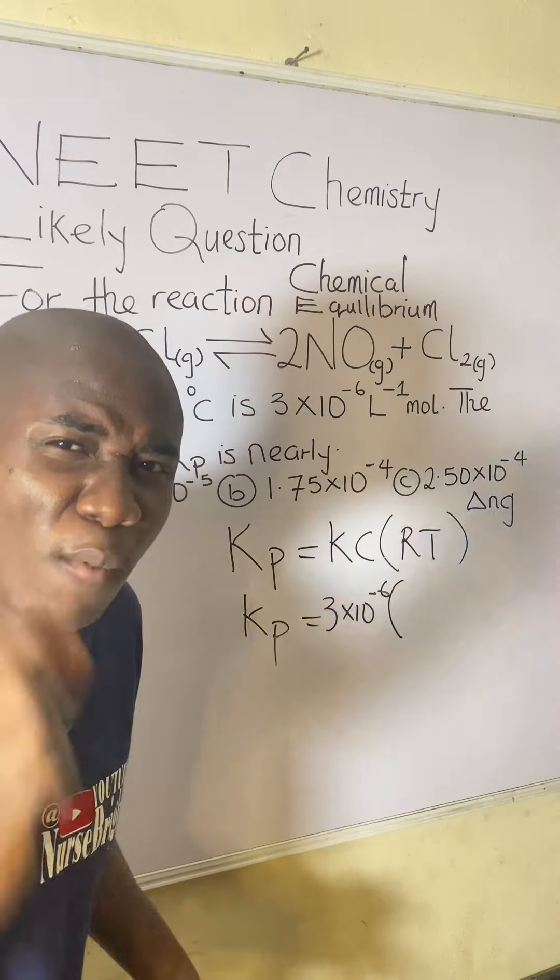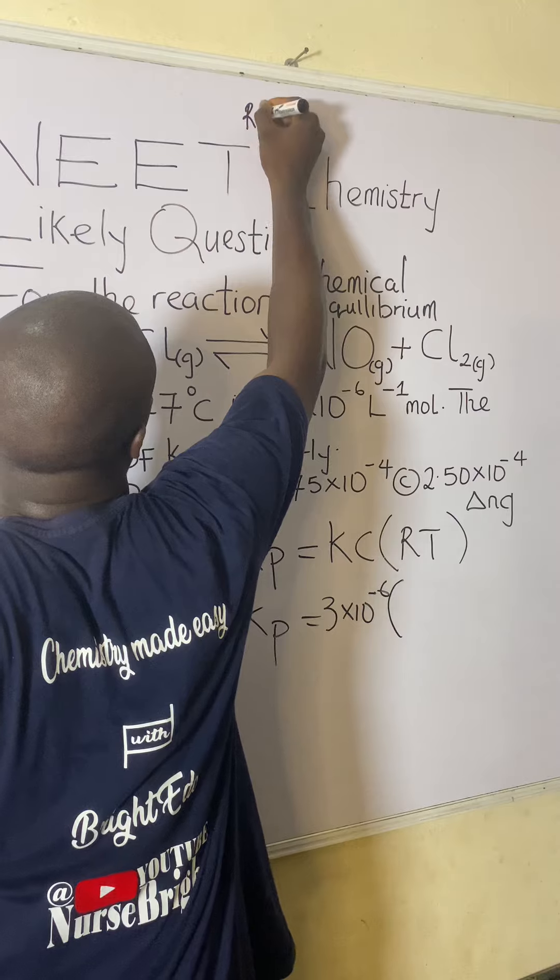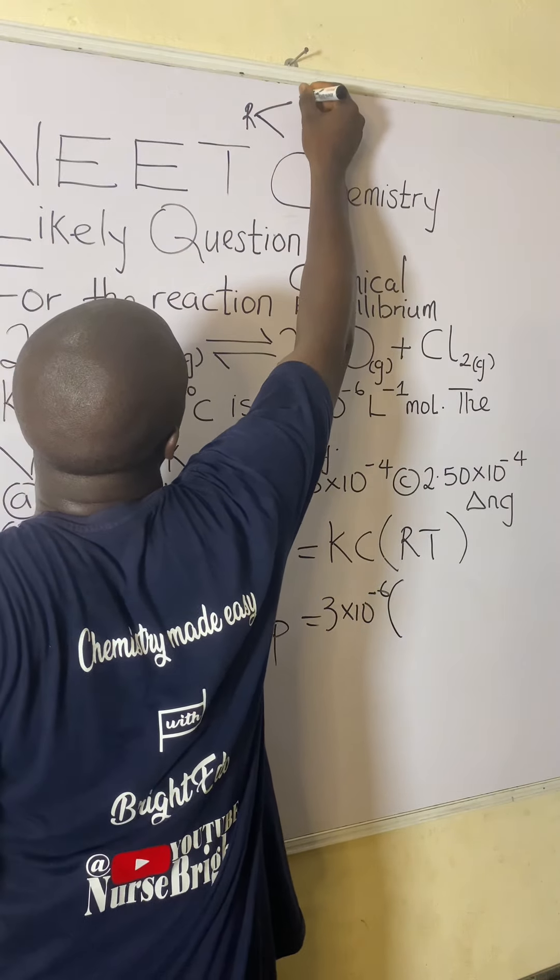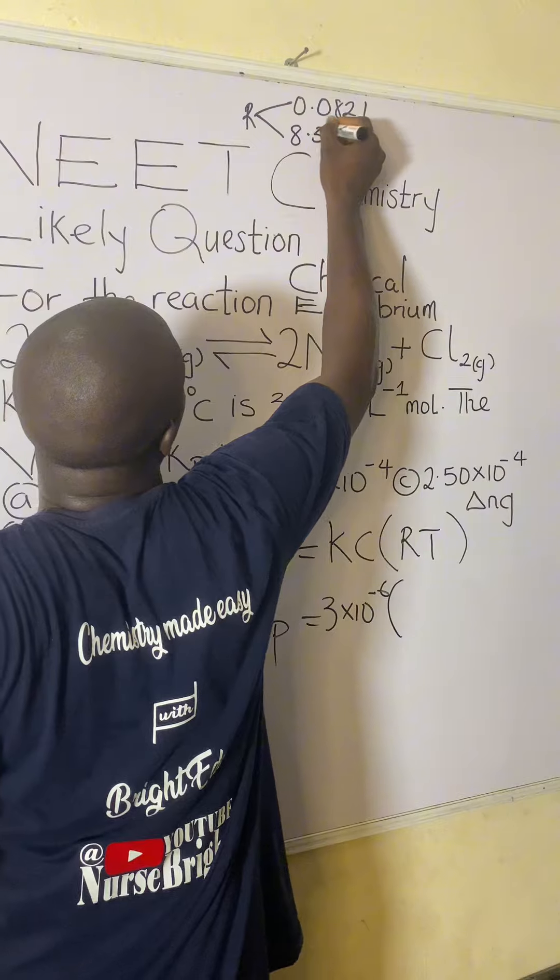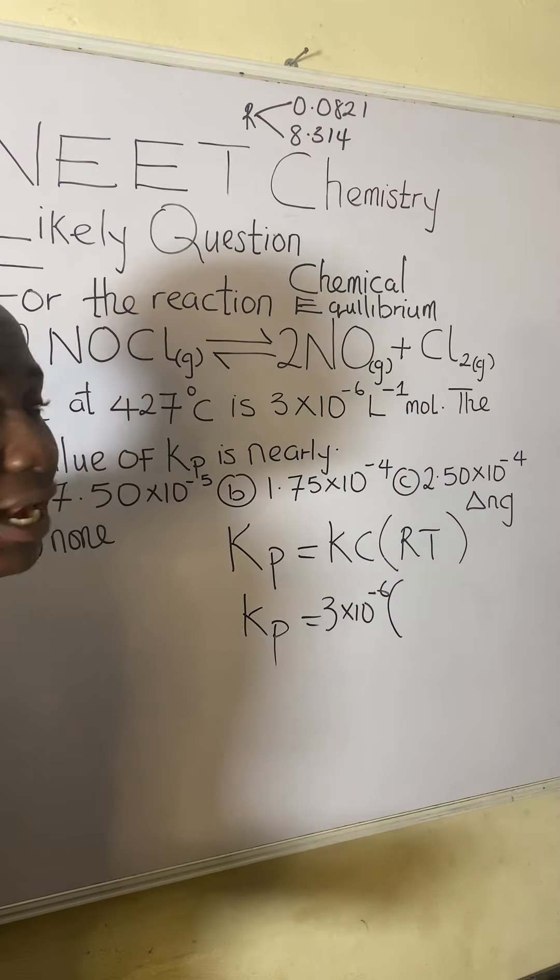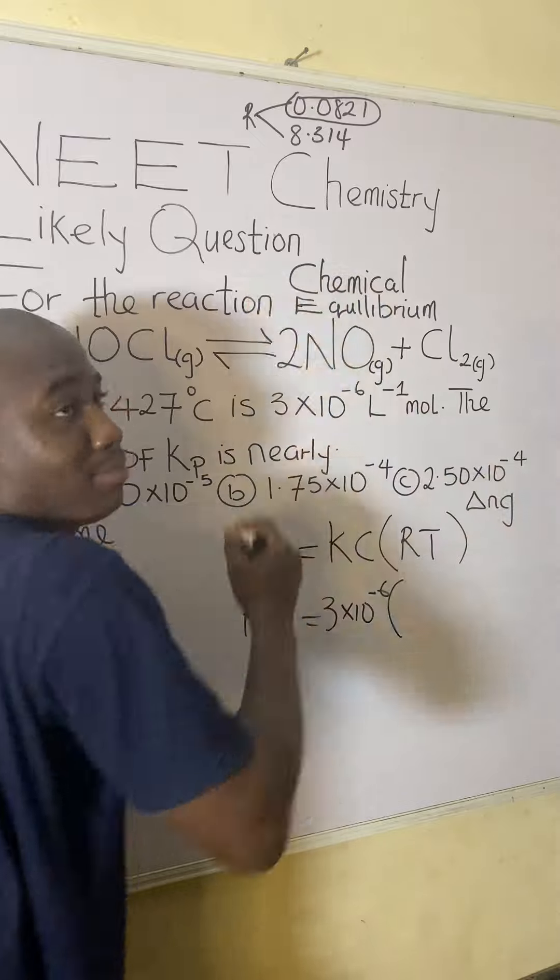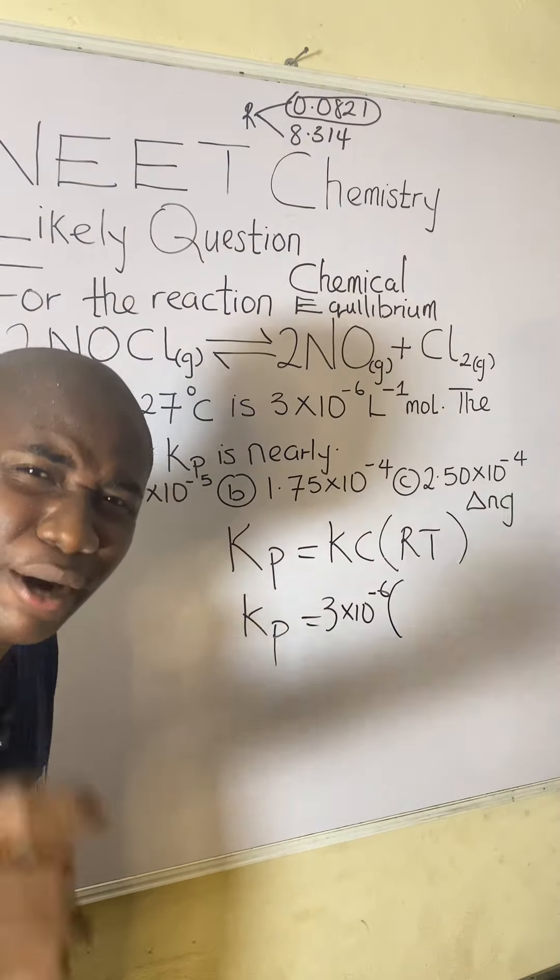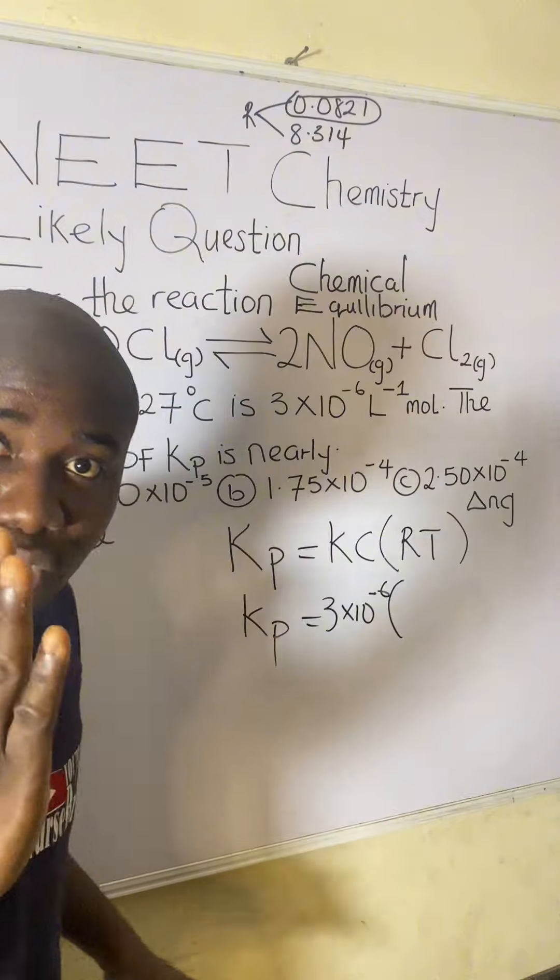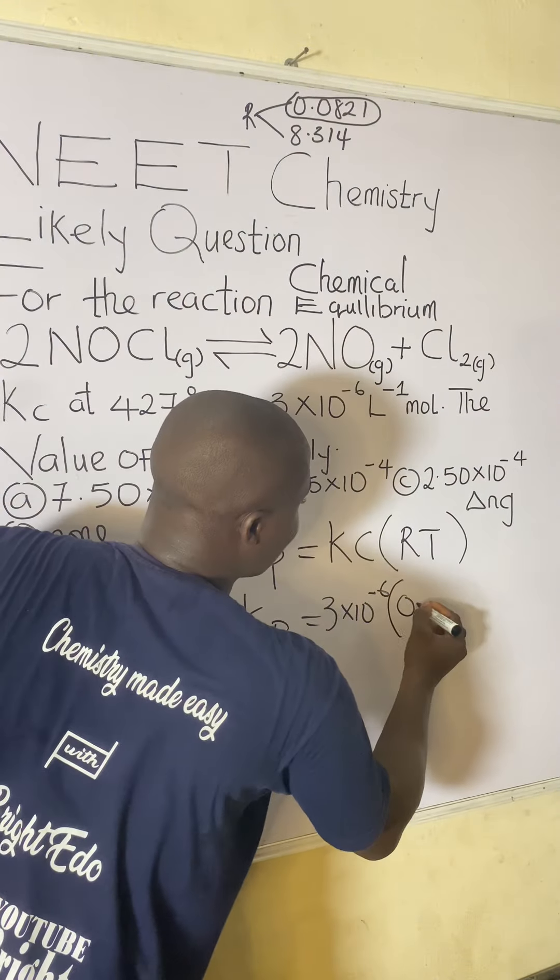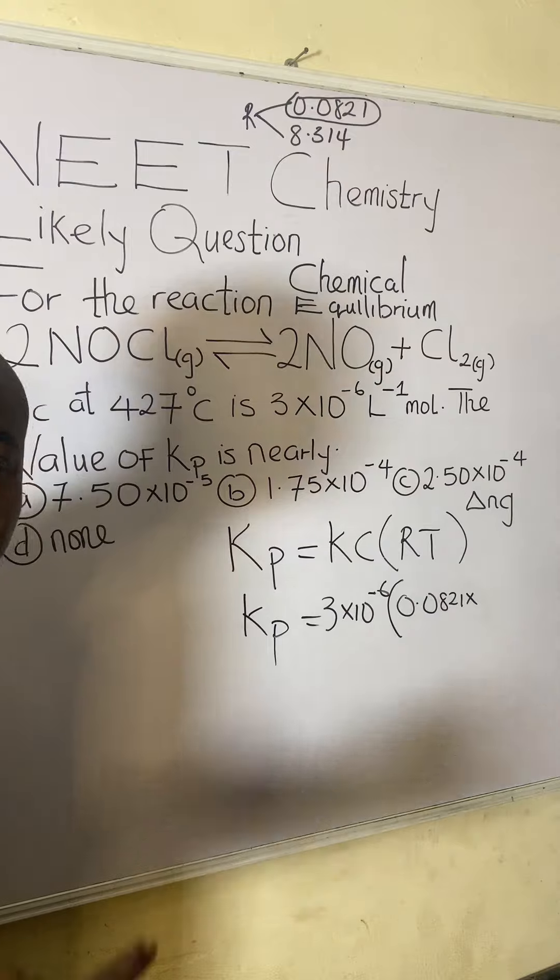Now moving further, here is R called the molar gas constant. And this molar gas constant, which is R, can be of two. It can be 0.0821 or 8.314. Are you getting me now? But in most cases, we use this constant. Please note what I'm saying. We use 0.0821. Though there is a reason, but notice. Do you understand what I just said?